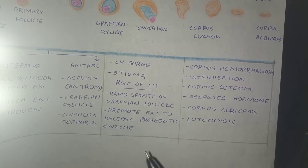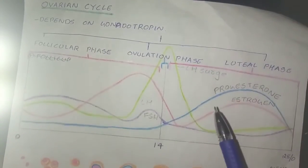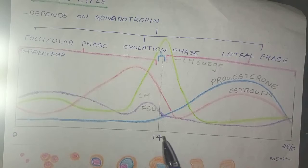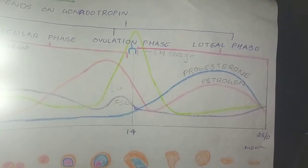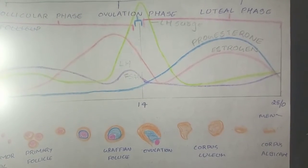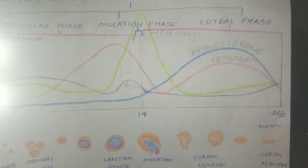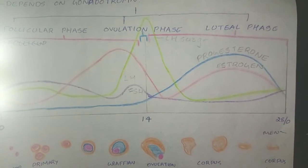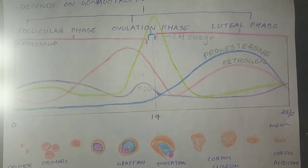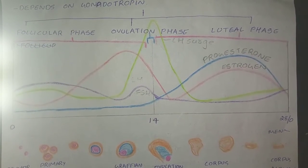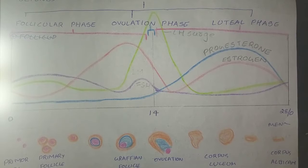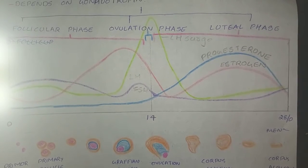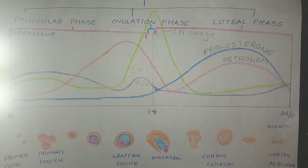Now we will see about the luteal phase, which is shown here from 14th day to 28th day. After the ovulation has occurred, the wall of the follicle collapses and blood accumulates in the cavity of the follicle, and this is called corpus hemorrhagicum. During ovulation, a minor bleeding occurs into the peritoneal cavity producing a fleeting lower abdominal pain called mittelschmerz.